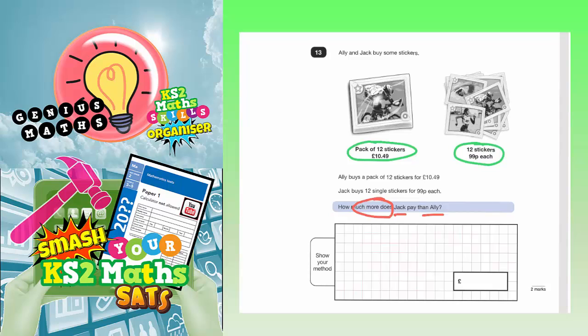Well, we already know that Ali pays £10.49 because it says so in the question here. So Ali is £10.49. That's nice and easy. What we've got to do is figure out how much Jack pays, and then we can work out the difference between the two.